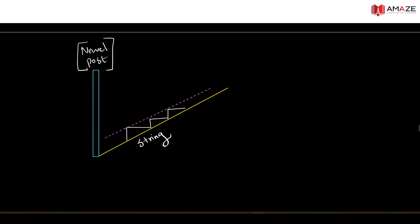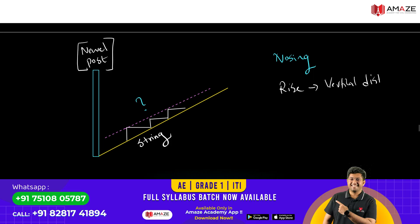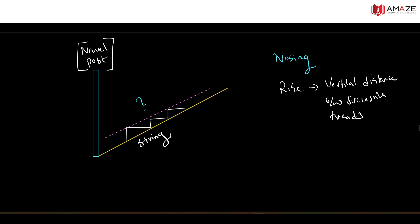In stair terminology, the string is a parallel item. Nosing is the projection part of the tread that extends beyond the face of the riser. Rise is the vertical distance between successive treads — the successive vertical distance between one step and the next.